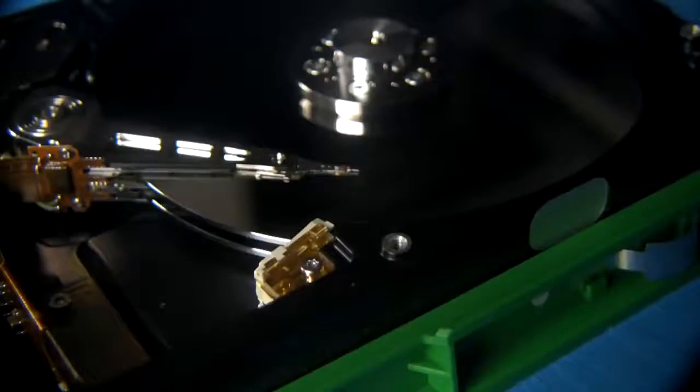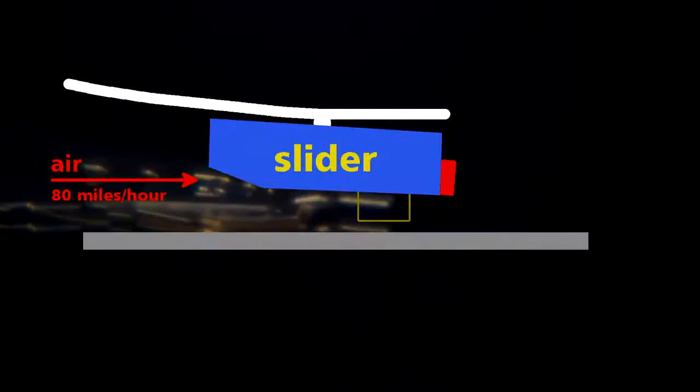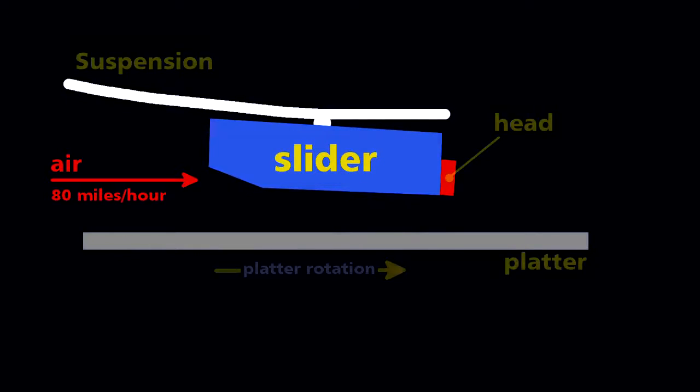To keep that critical height, engineers use an ingenious method. They float the head over the disk. As the disk spins, it forms a boundary layer of air that gets dragged past the stationary head at 80 miles per hour at the outer edge. The head rides on a slider aerodynamically designed to float above the platter, and the genius of this air-bearing technology is its self-induced adjustment.